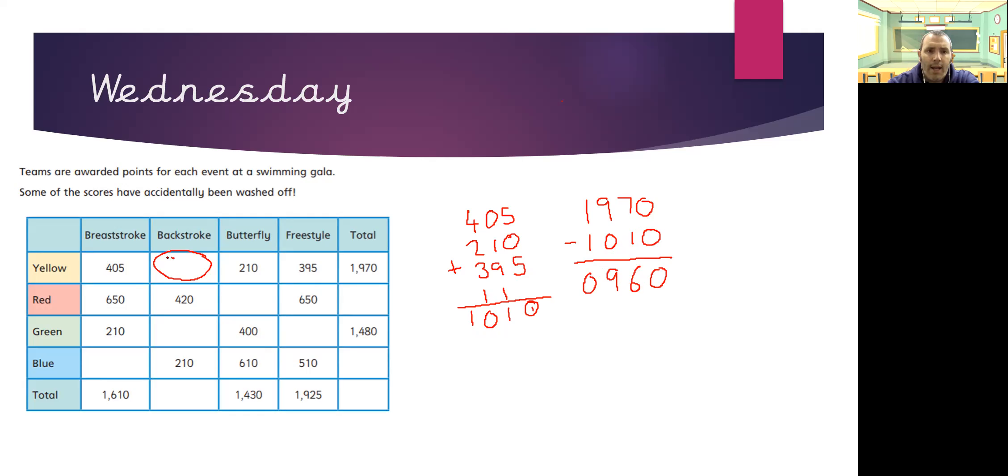So that will go in here. And then you need to look for the next piece of information that you can find using what you already know. If you look at the rows now, we don't have enough information to work them out. So we need to start looking at the columns.